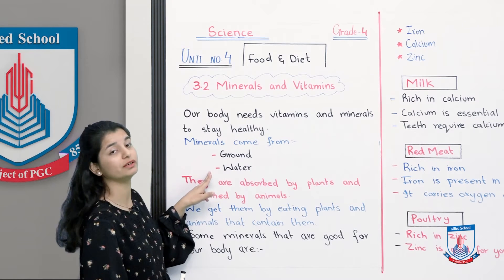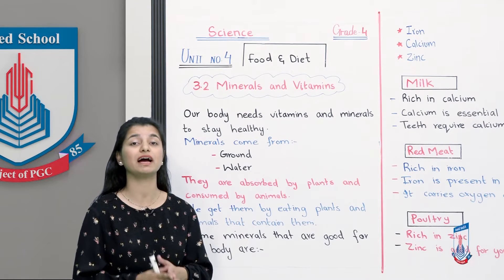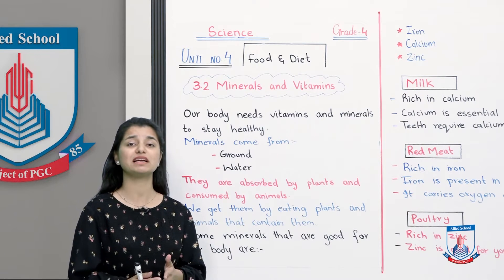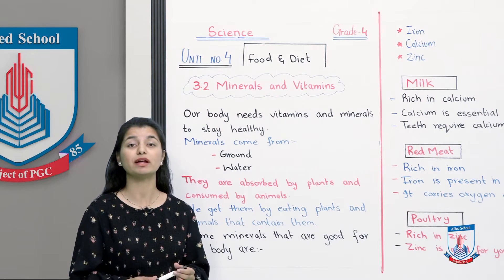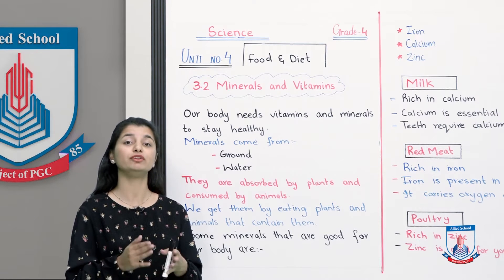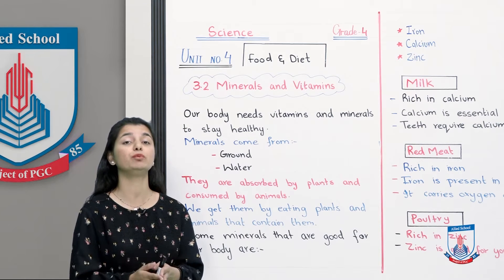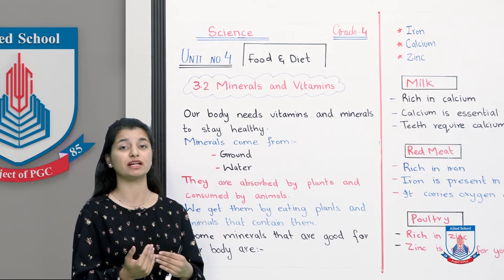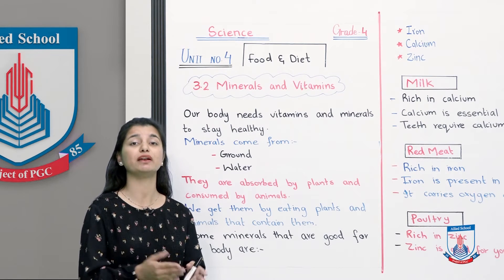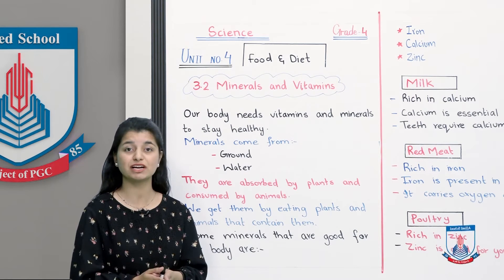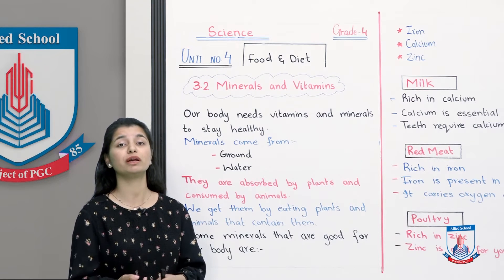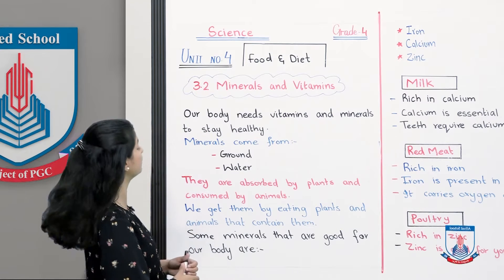Minerals come from the ground and water. They are present in soil. Dead animals or dead plants go into the soil, and when they decompose, their minerals get added back into the soil. In this manner, soil accumulates all its minerals. Water is also a source. So there are two sources: the ground and the water.